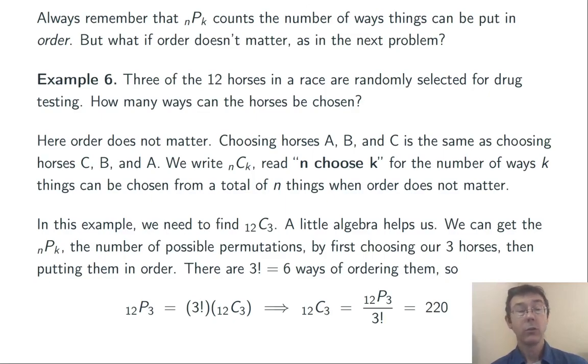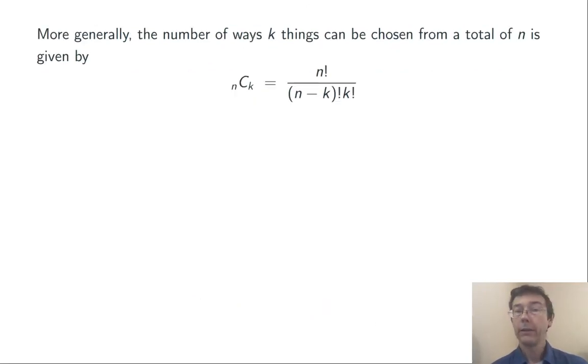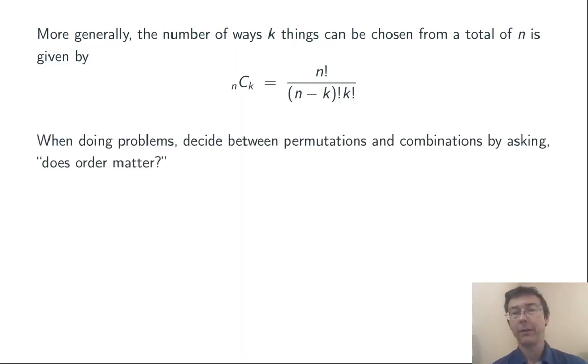And then I'm just going to solve that for 12 choose 3. So, in this case, 12 choose 3 is 12 permute 3 over 3 factorial. I get 220. That's how many ways I can choose 3 horses out of the 12 to be randomly tested for drugs. Let's generalize that a little bit. n C k, n choose k, is going to be n P k over k factorial. So, I get n factorial over n minus k factorial times k factorial. Now, when we're doing problems with permutations and combinations, the fundamental question you have to ask is, does order matter? If order matters, you're in a permutation problem. If it doesn't matter, you're in a combinations problem.